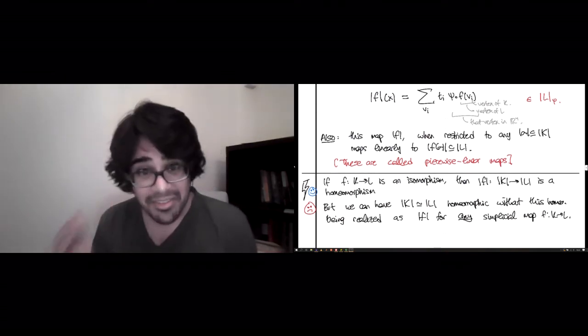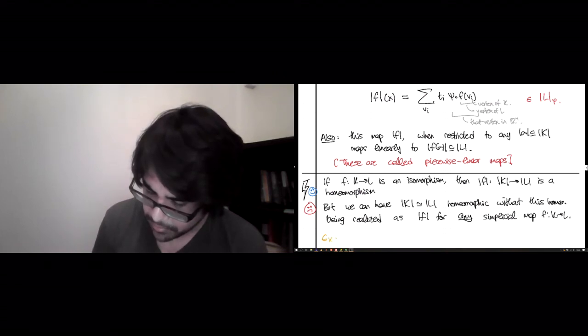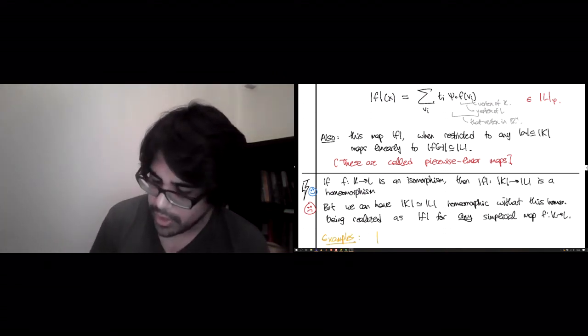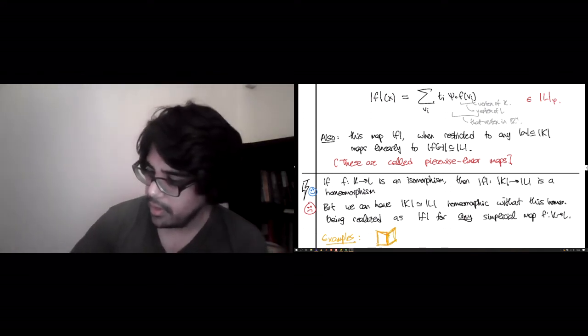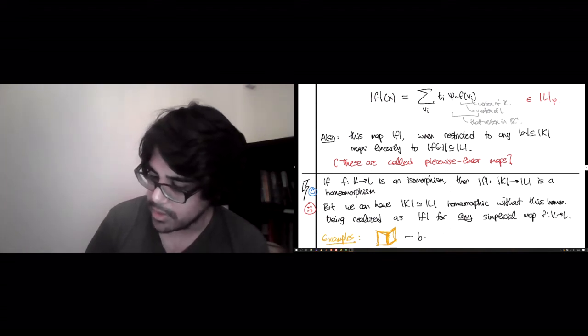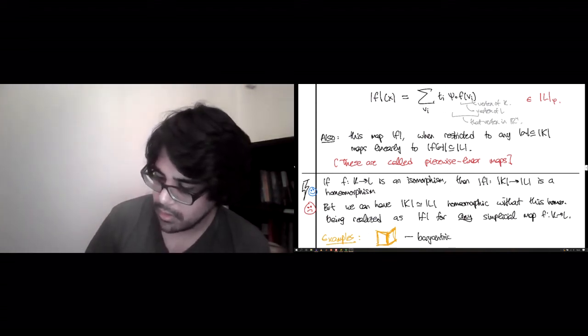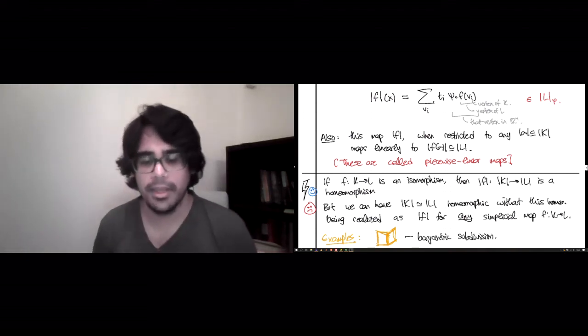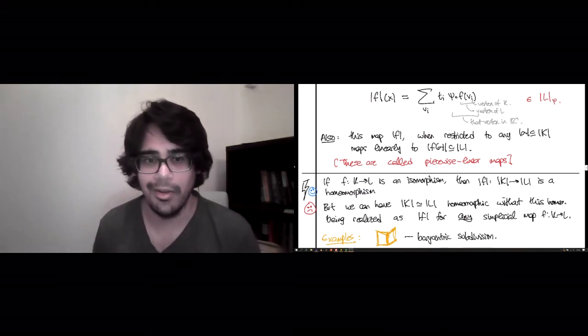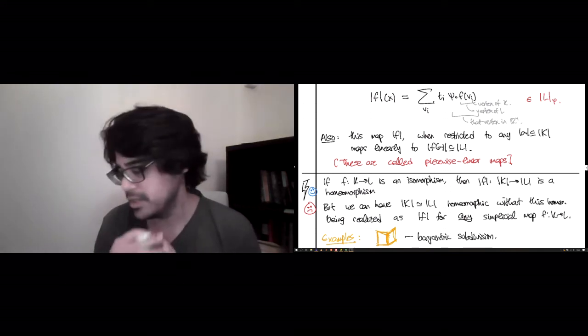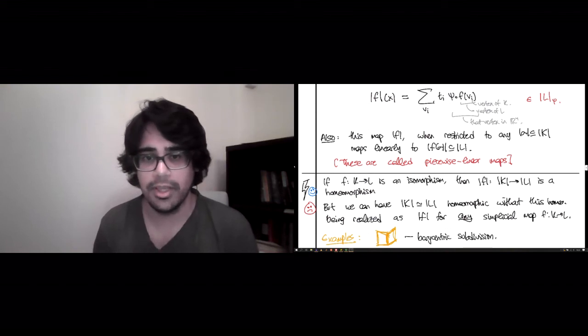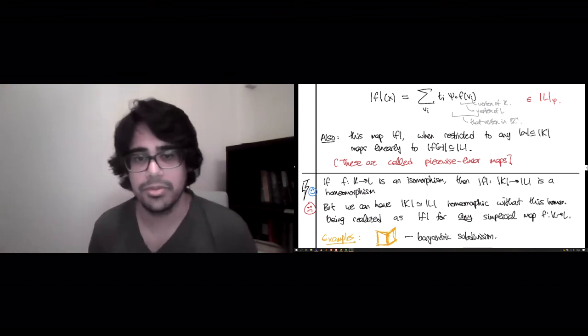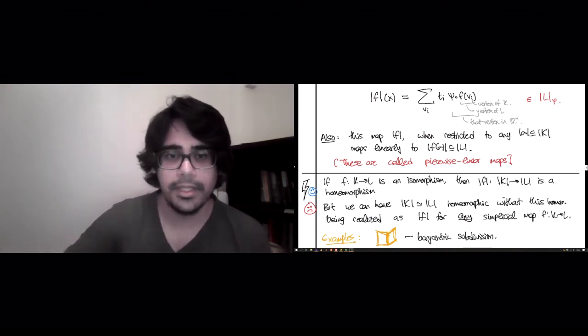And to see an infinite family of examples, you should read the notes of this course. So there are some notes and look at the section on barycentric subdivision. This gives a huge family, an infinite family of examples where you have homeomorphic geometric realizations, but no good simplicial maps to achieve it. Okay, that's all. See you next time.